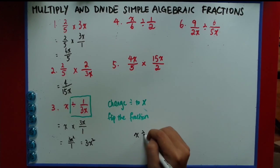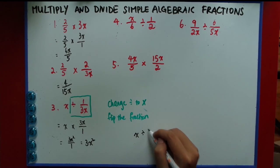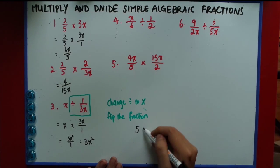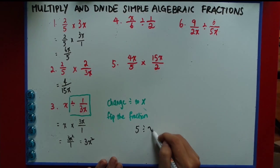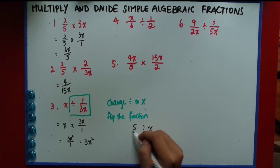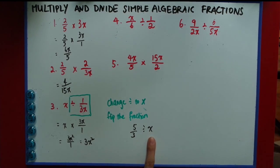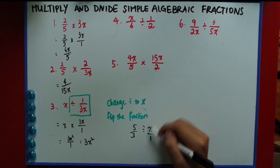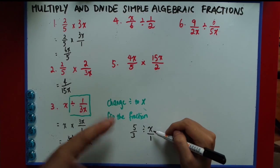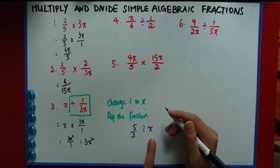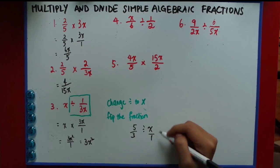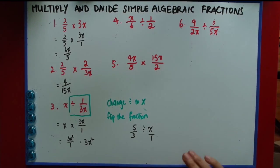What if you have something like 5 divided by x? You have to know that x is actually x over 1. Once you express it as a fraction, it should be clear, because sometimes students see this and think 'flip the fraction — but what fraction?' The fraction is this one, expressed as x over 1.